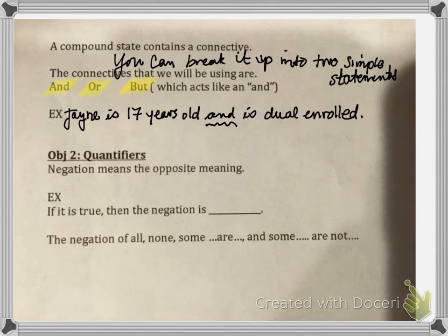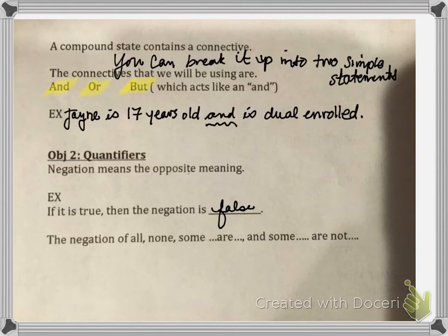Next: quantifiers. We have to talk about the word negation first. Negation means the opposite meaning. For instance, if we had a true statement and I negate it, it makes it false. The negation of the big quantifier words — all, none, some are, and some are not — is really important.